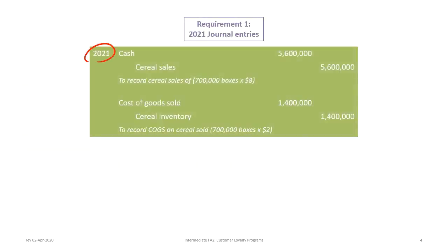During 2021 the company sold 700,000 boxes of cereal at $8 a box, so cash is debited for $5,600,000 and cereal sales are credited for $5,600,000. There is also a corresponding cost of goods sold entry. The cost of goods sold on the product is $2 a box, so debit cost of goods sold for $1,400,000 and credit cereal inventory for $1,400,000.